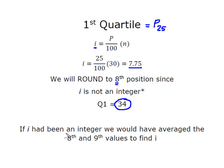Remember if i had been an integer, i.e. whole number, then I would have averaged my eighth and my ninth values to find my index.